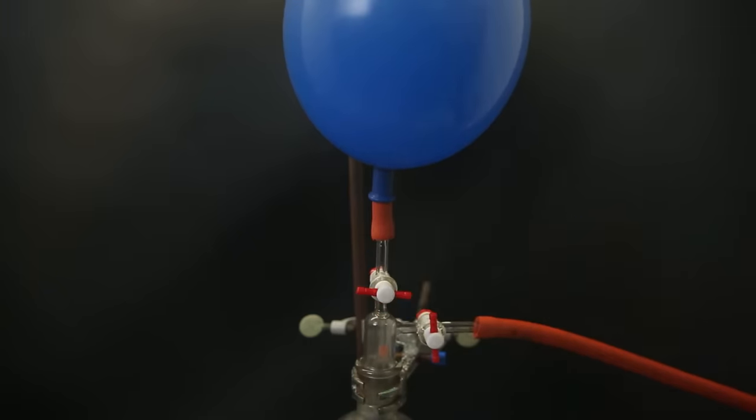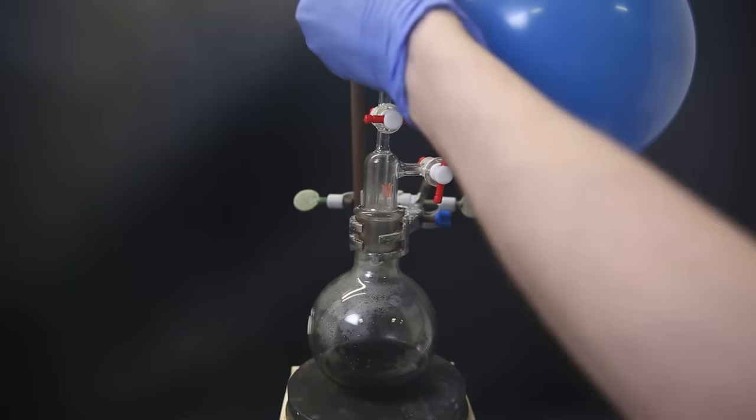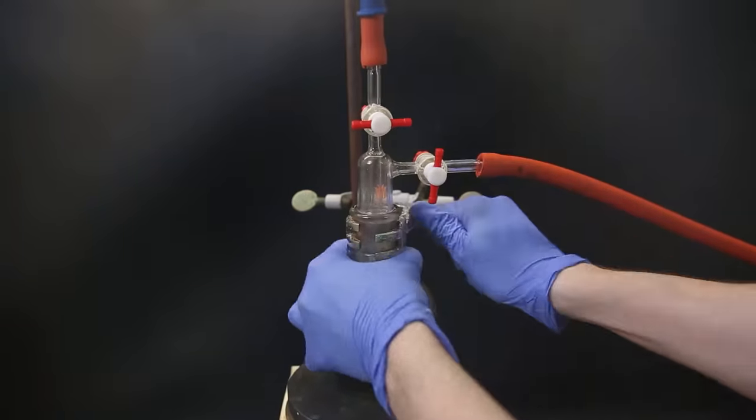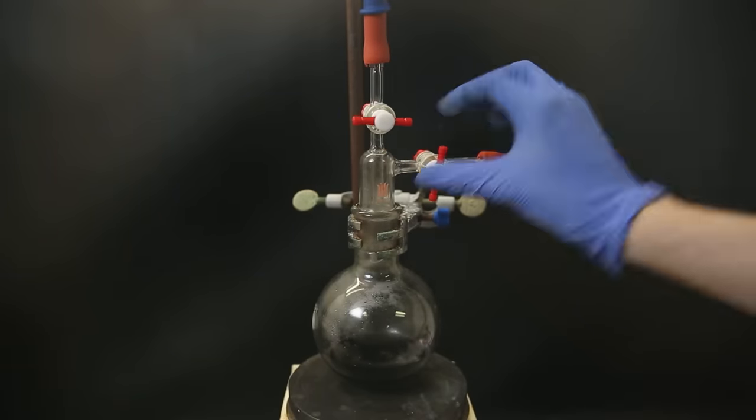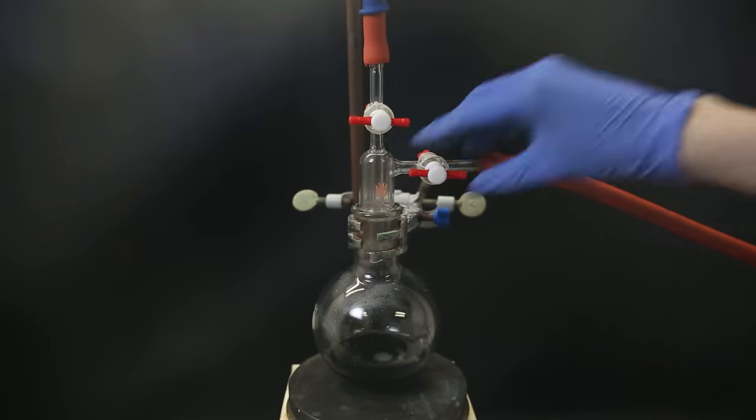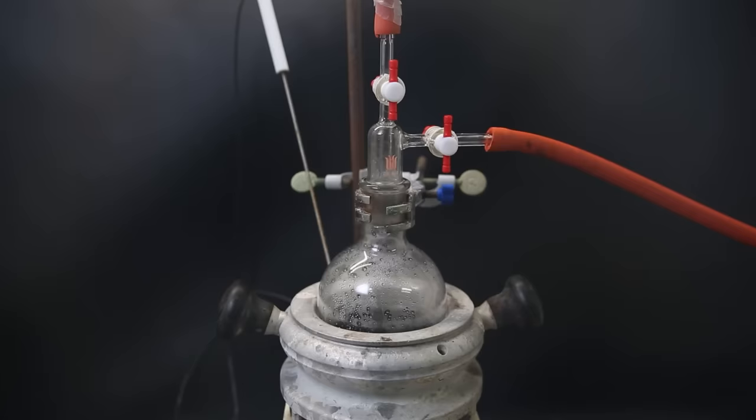I then replace a nitrogen balloon for a hydrogen balloon. I repeat the same steps to make sure that the flask is completely filled with hydrogen and then leave the way to the hydrogen balloon open. I leave this to stir at 35°C overnight.